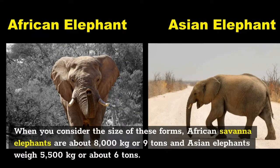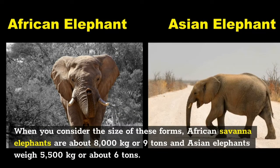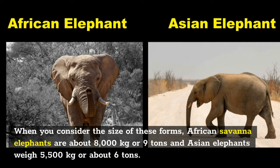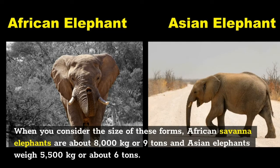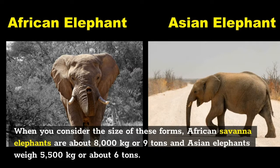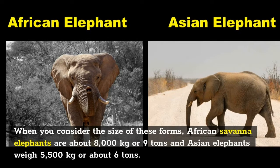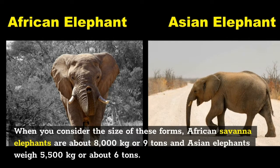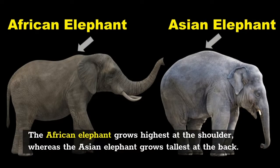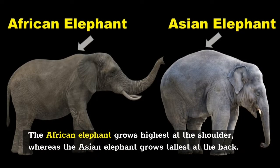When you consider the size of these forms, African savannah elephants are about 8,000 kg or 9 tons, and Asian elephants weigh 5,500 kg or about 6 tons. The African elephant grows highest at the shoulder, whereas the Asian elephant grows tallest at the back.